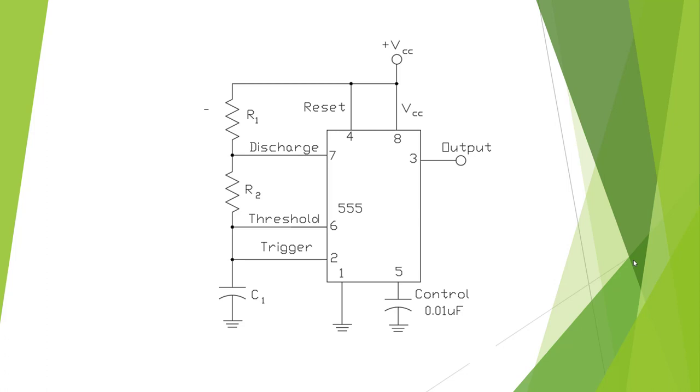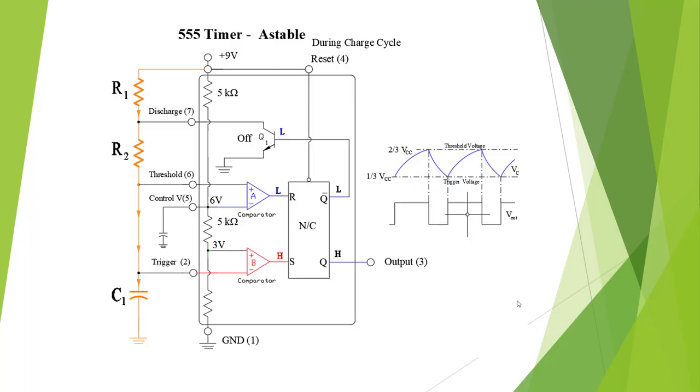Here's a schematic for the astable. The astable timer will put out a continuous pulse at a frequency and pulse width that we design based on these two resistors and this capacitor. And you can tell this is astable because we have two resistors and one capacitor.